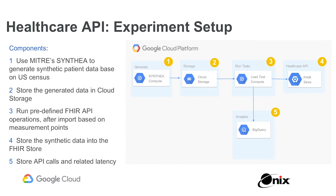In our setup, we used compute instances to generate the synthetic data and stored it in FHIR STU3 format in Cloud Storage. From there, we loaded that data into the FHIR Store — a concept in the Healthcare API — which takes patient data and stores it in a way that's easy to retrieve, following the same set of APIs and protocols so that other systems can consume and interact using that protocol to pull and push data. So imagine a proprietary EMR: they can simply write a translation into this FHIR Store and make that data accessible through the right permissions and credentialing to other organizations.